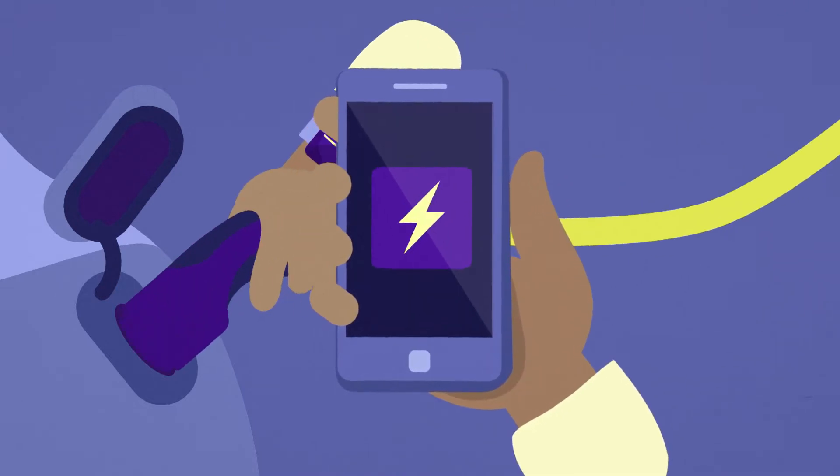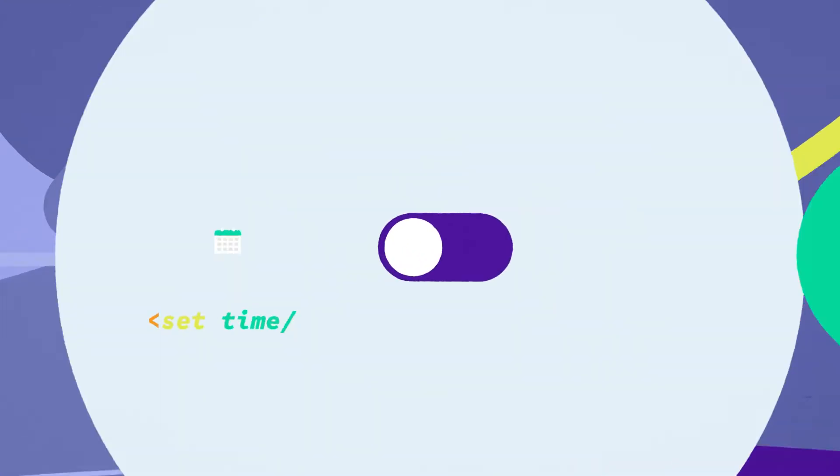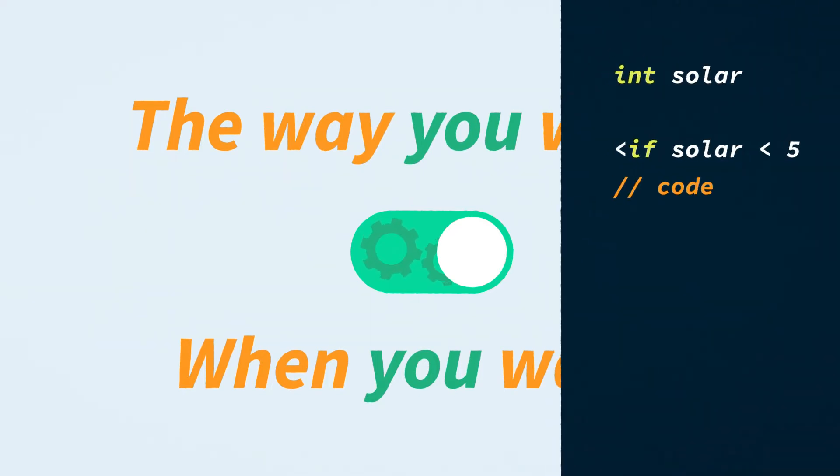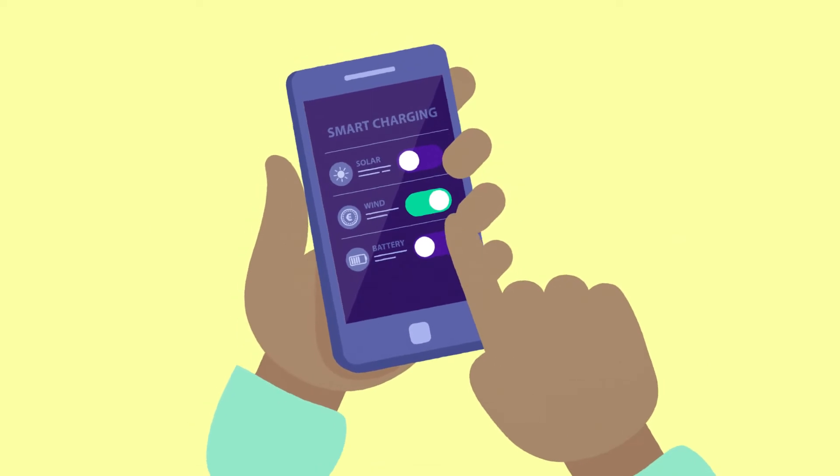Because why should the moment of plugging in determine when and how fast your car charges? With smart charging, you charge your electric car the way you want, when you want. No hassle at all. You simply set your options and you can easily adjust them when you want.